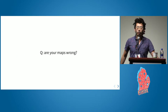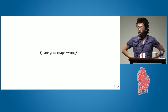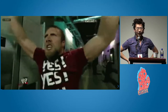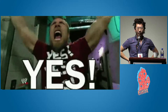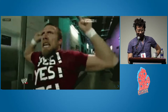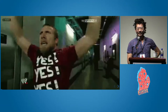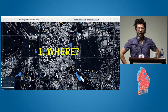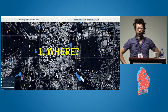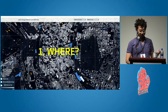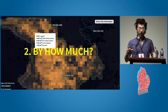We started developing this application with a question: are your maps out of date? And the answer is probably yes. If we go with that assumption — that your maps are probably out of date because of rapid urban change — two important questions we need to ask after that are: where are they out of date, and how much are they out of date by?